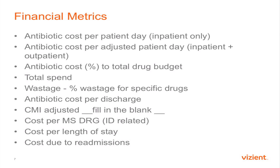If you have a lot of outpatient activity or an outpatient IV clinic, you need to adjust your aggregate spend. That's what we call an adjustment factor — the difference between cost per patient day and cost per adjusted patient day. If you're strictly pulling inpatient antibiotic spend, map it over your inpatient patient days. Some people look at cost as a percent of total drug budget, but that's not very helpful from an antibiotic metric standpoint.